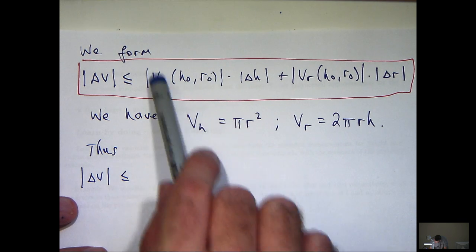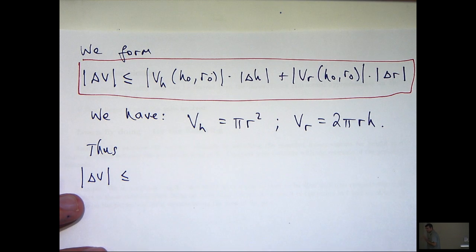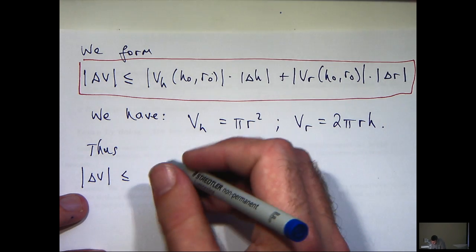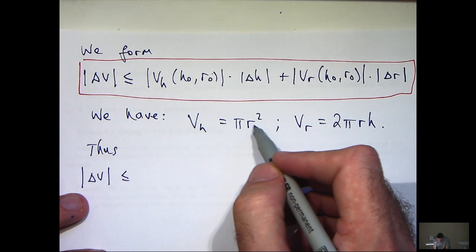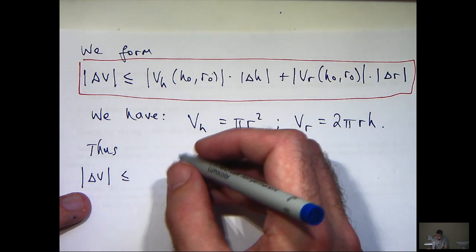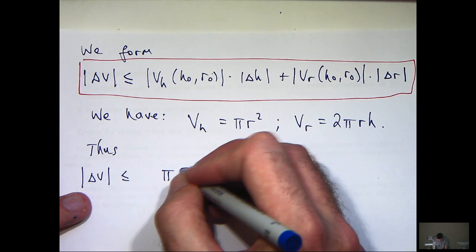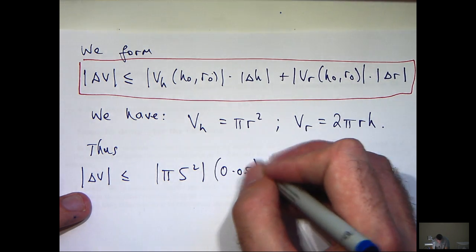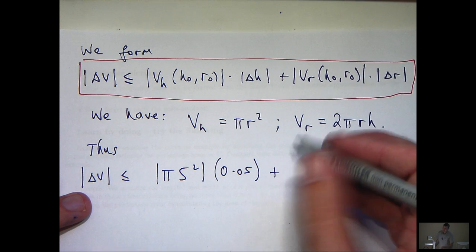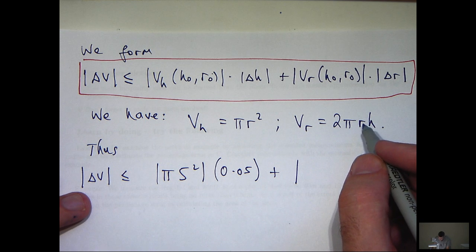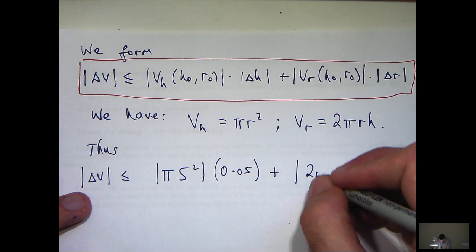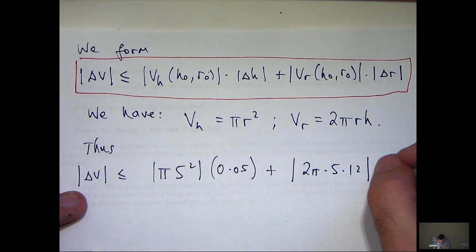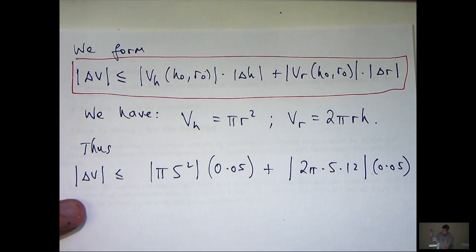So we want to evaluate this at h = 12, r = 5. And let's just substitute in there for r = 5, we'll get basically π × 5². Now, this is less than or equal to 0.05. Over here, this is going to be 2π × 5 × 12. And again, this is less than 0.05. So all you need to do now is clean up a bit.